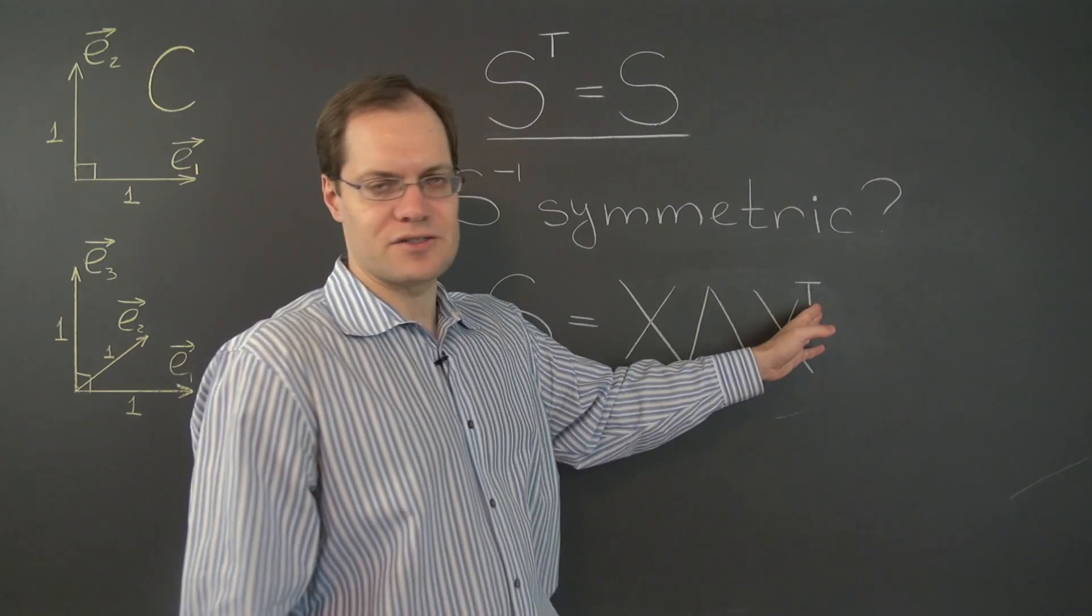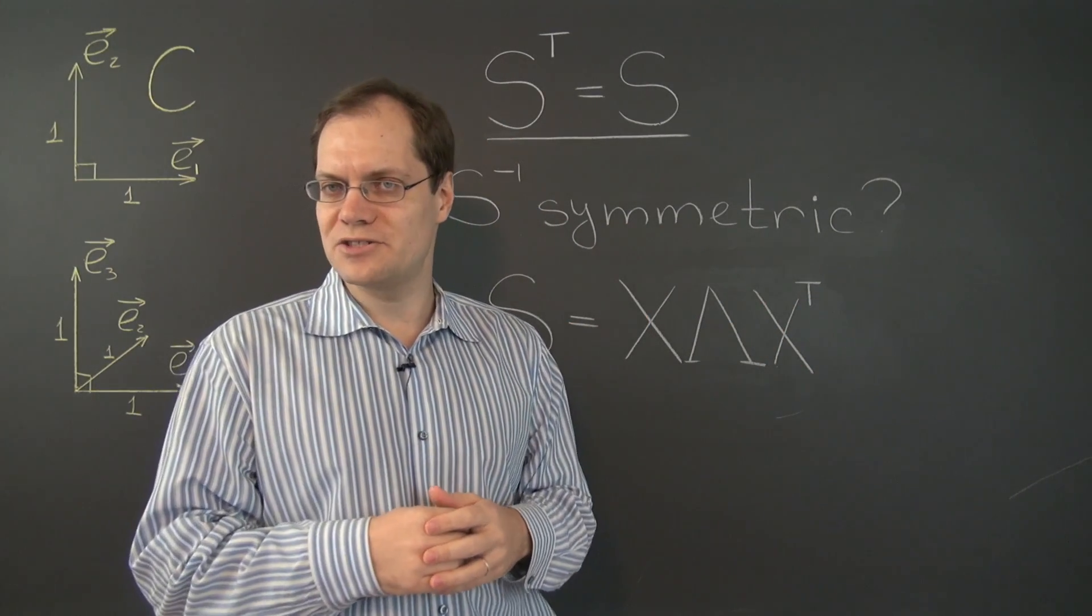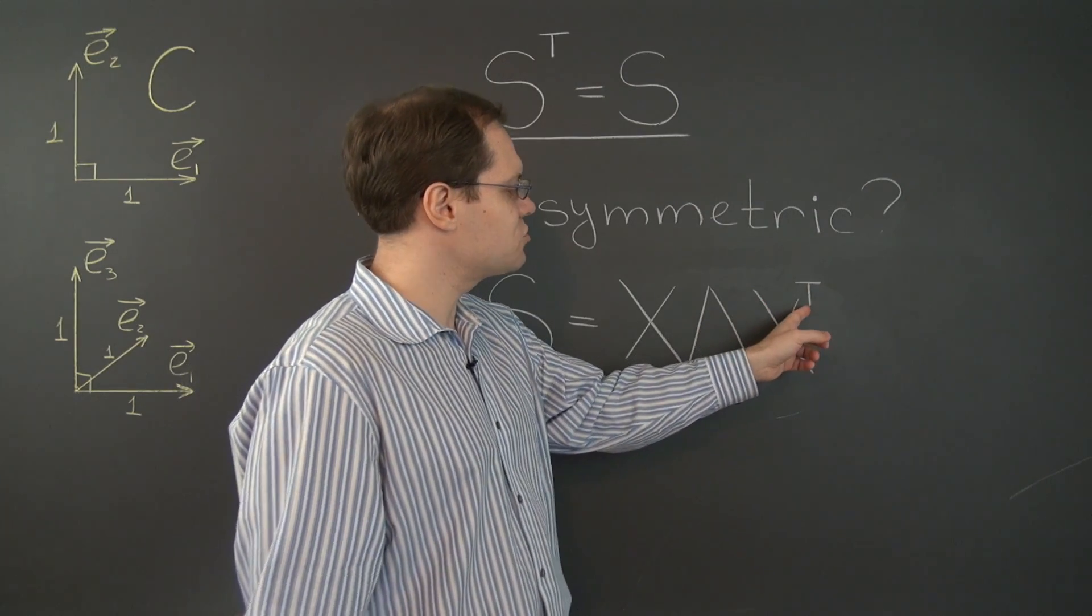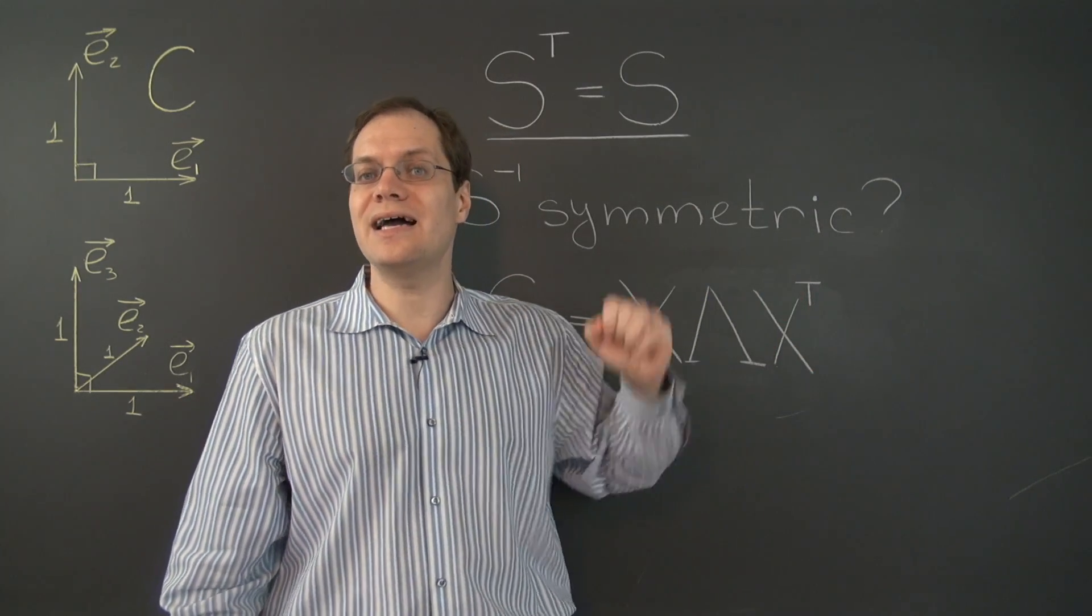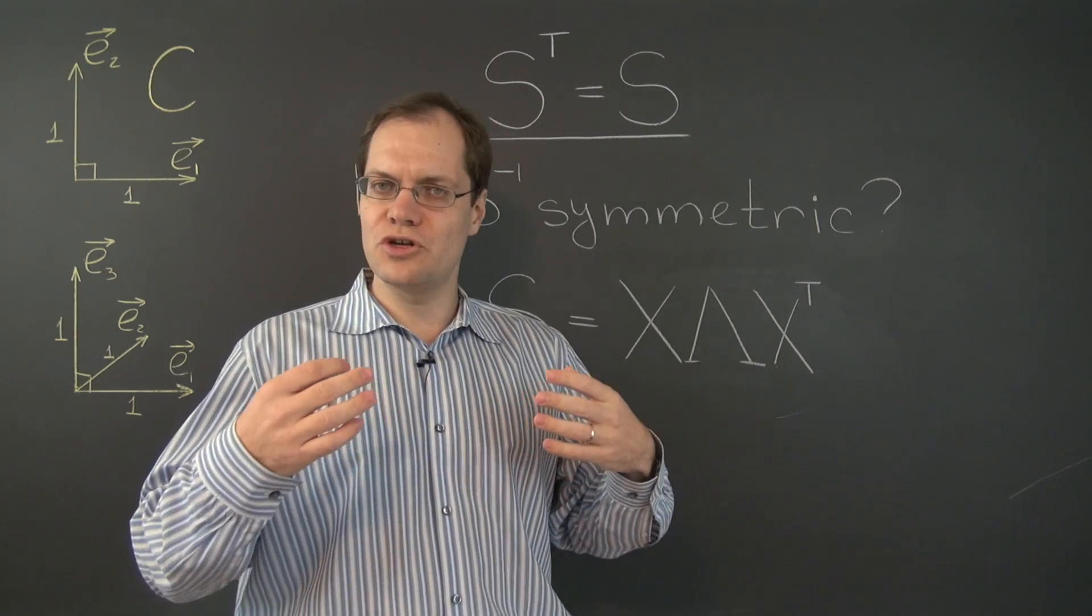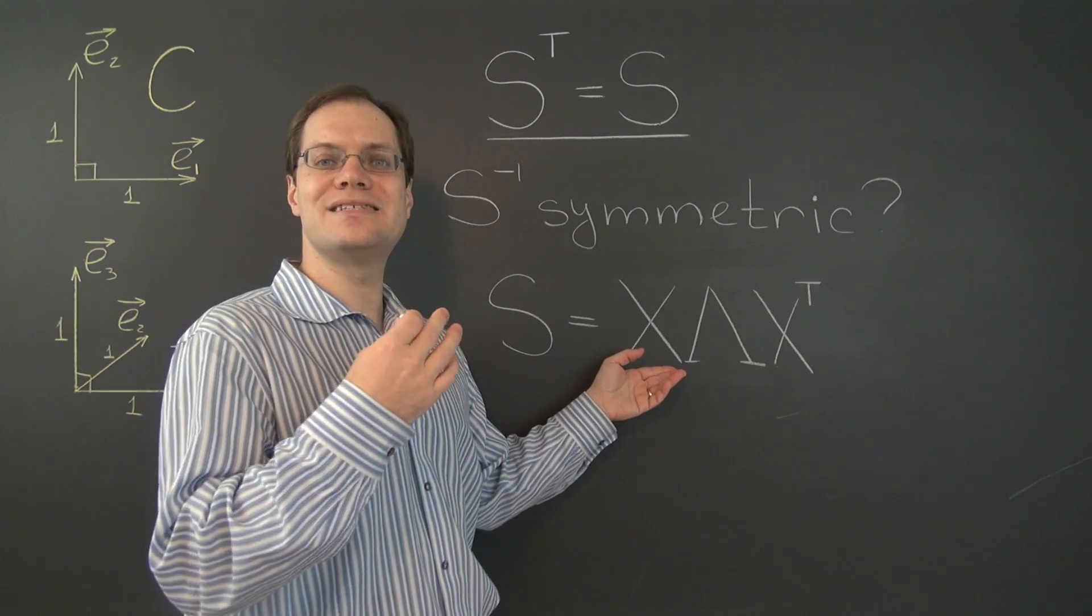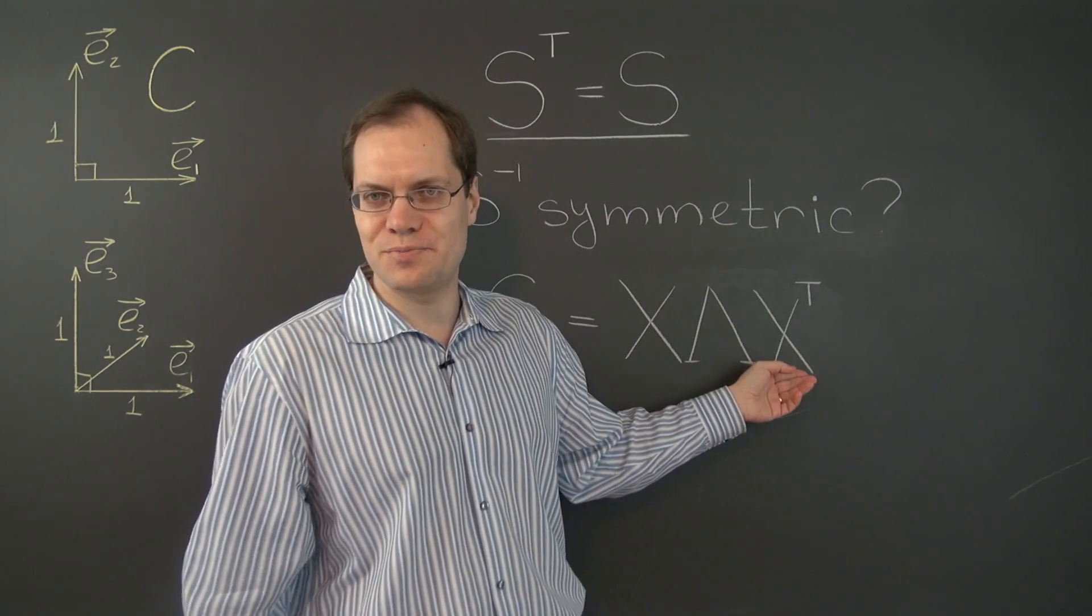Not just inverse, as the case is with general, not necessarily symmetric matrices, but actually X transpose. Because the eigenvectors of S are orthogonal and can be chosen orthonormal. And then the resulting matrix is called orthogonal and its inverse is its transpose.